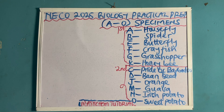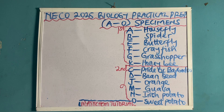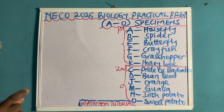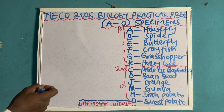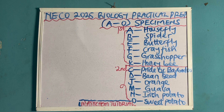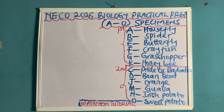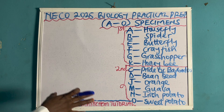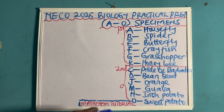Now let's go to the second category. This category of specimens includes: specimen C is Pride of Barbados, which is a flower — students should identify the type of flower. Specimen D is a bean seed — a single bean seed. Specimen J is orange. Specimen M is guava. Specimen N is Irish potato, and specimen O is sweet potato. These are all familiar specimens that students should know well.